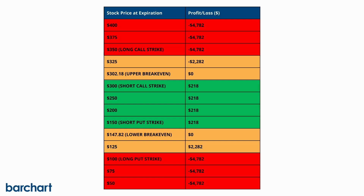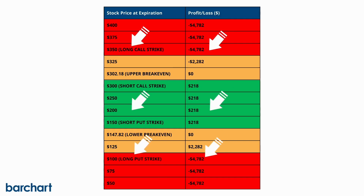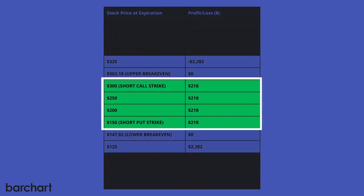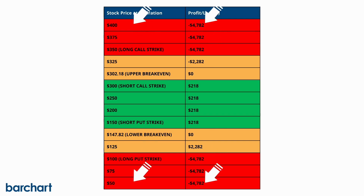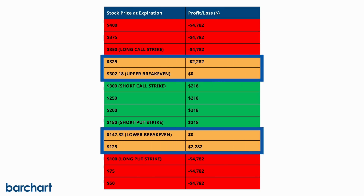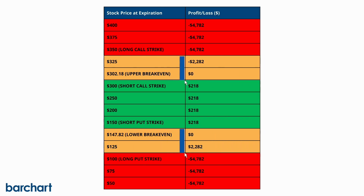Here's how the trade would look if Tesla reaches certain prices at expiration. As you can see, if Tesla's stock price stays within the short strikes at expiration, you'll achieve maximum profit. Meanwhile, any price movement beyond the long strikes will result in a maximum loss. And the area between the long and short strikes will lead to partial losses or gains depending on the price relative to the break-even points.